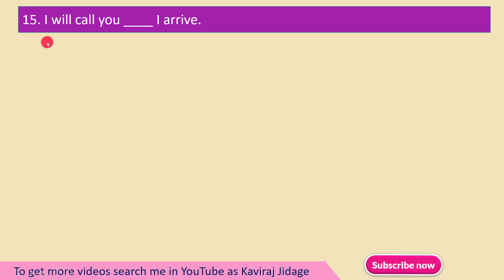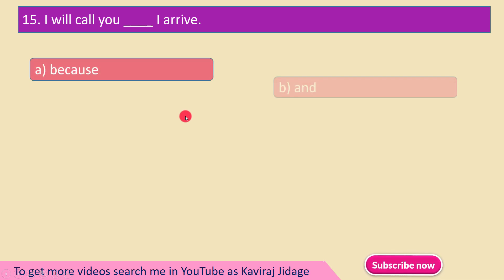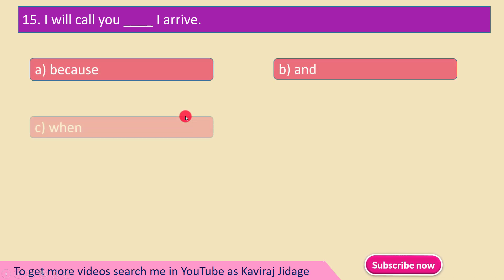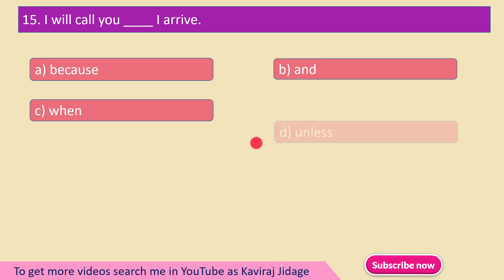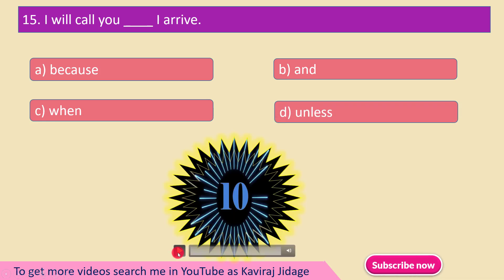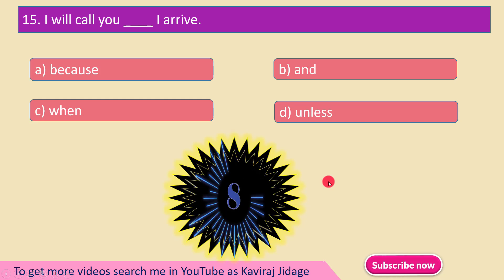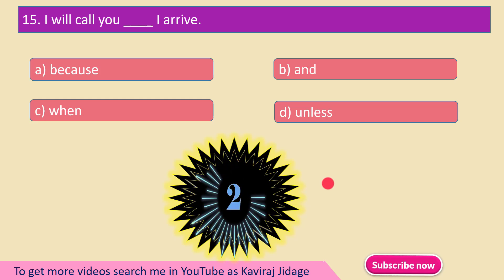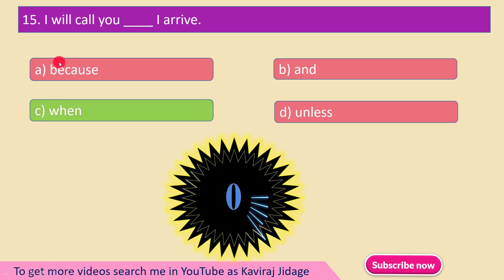Question number 15: I will call you ___ I arrive. A) Because, B) And, C) When, D) Unless. The correct answer is option C — When: I will call you when I arrive.